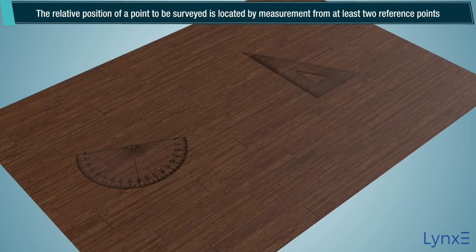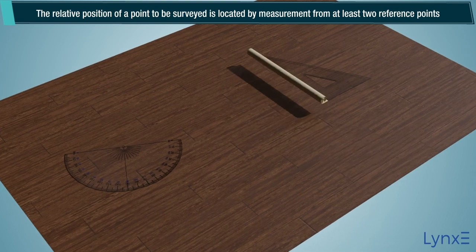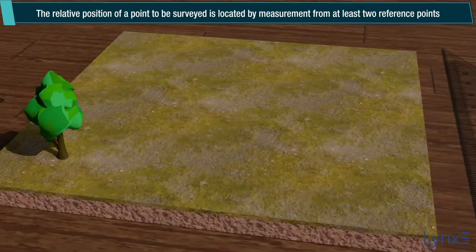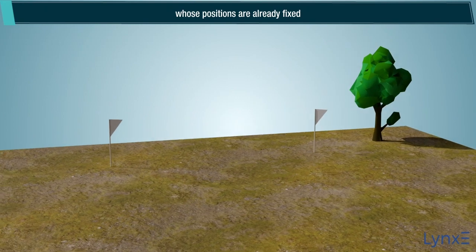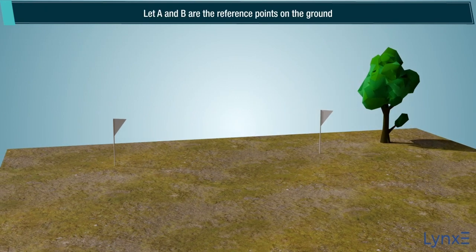The relative position of a point to be surveyed is located by measurement from at least two reference points whose positions are already fixed.